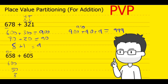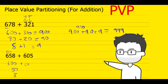Step 2: break the second number down into its place value parts, and then add the 100's with the 100's, the 10's with the 10's, and the 1's with the 1's. So we have 600 plus 600. You can see that there are no 10's in the 10's column in this number, so it's going to be 50 plus 0. In the 1's column we have 5, so it's 8 plus 5.